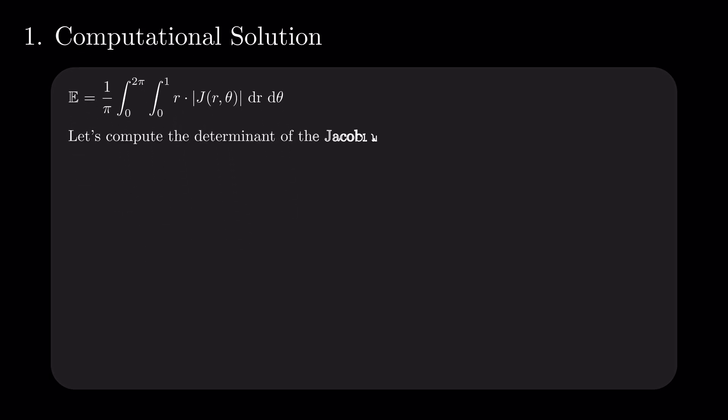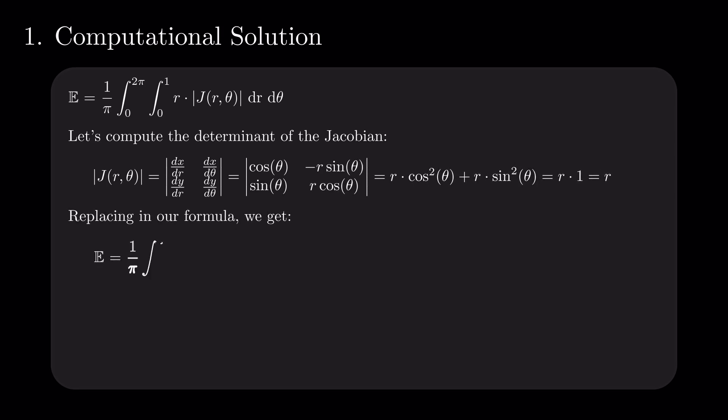Let's write down the Jacobian matrix, and compute its determinant. With some simple trigonometry, we find the determinant of the Jacobian is equal to r. We put this final piece of the puzzle in place, and compute the now much easier integral. The result is 2 divided by 3, and, just as warned, not equal to a half.